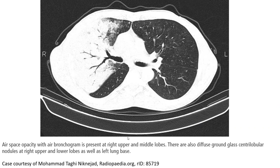Another case where we can find airspace opacity with air bronchogram. It is present at the right upper and middle lobe. There are also diffuse ground glass centrilobular nodules at the right upper and lower lobe, as well as left lung base.